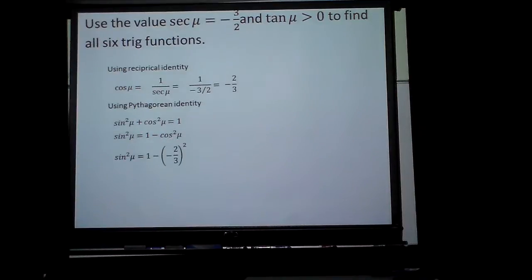So then sine squared would be 1 minus, and if cosine is negative 2 thirds. Now, be careful. Negative 2 thirds times negative 2 thirds is going to be positive 4 ninths. But I've got to minus the 4 ninths, which will give me then 5 ninths, but I have to square root it.